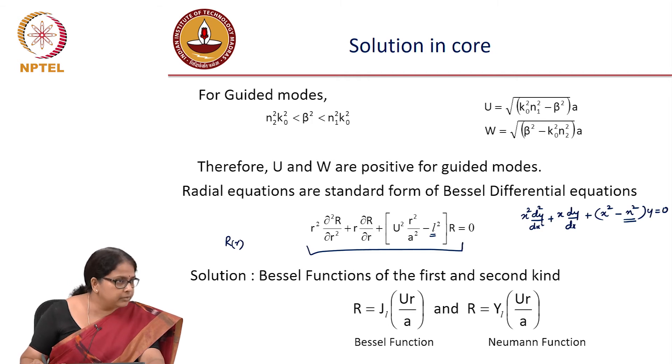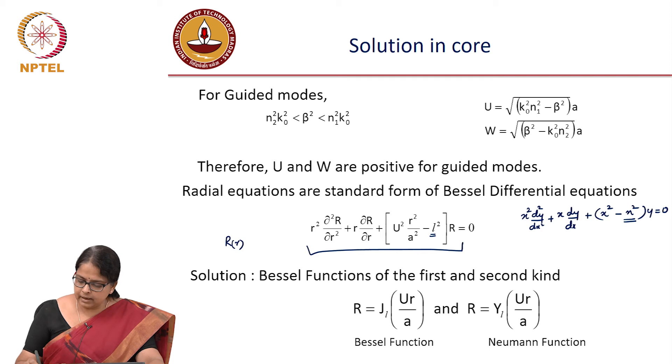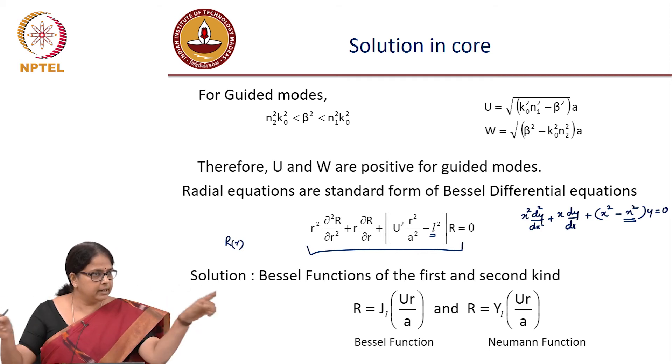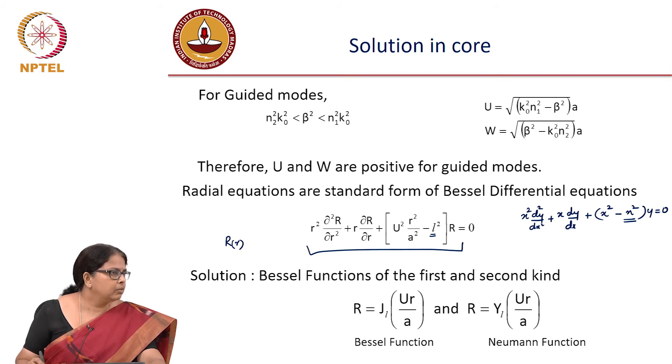So which means that for different values of l, the form of the function is going to be different. And what is the variable here? r is of course the radial variable. What about u, do you know, have full information about u? What is unknown there? Beta is unknown there. So for different values of beta, it could take different forms. The issue is that there are two possible solutions for this differential equation. So the question is, which one should I choose?